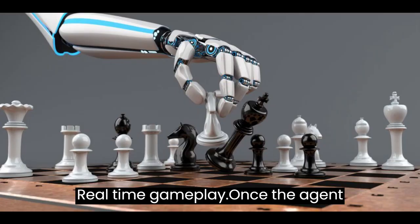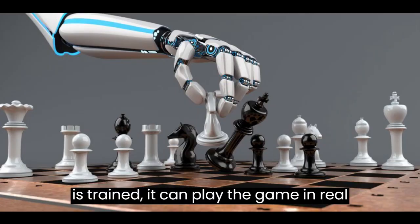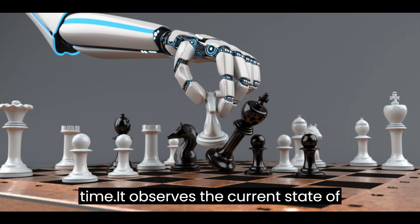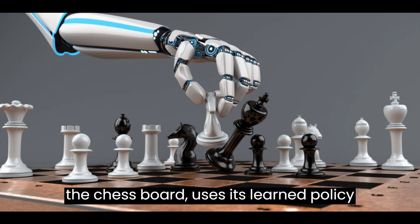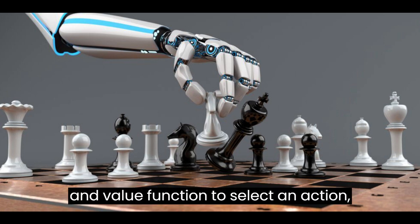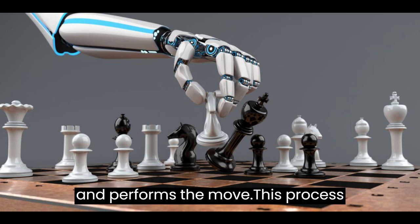Once the agent is trained, it can play the game in real-time. It observes the current state of the chessboard, uses its learned policy and value function to select an action, and performs the move.